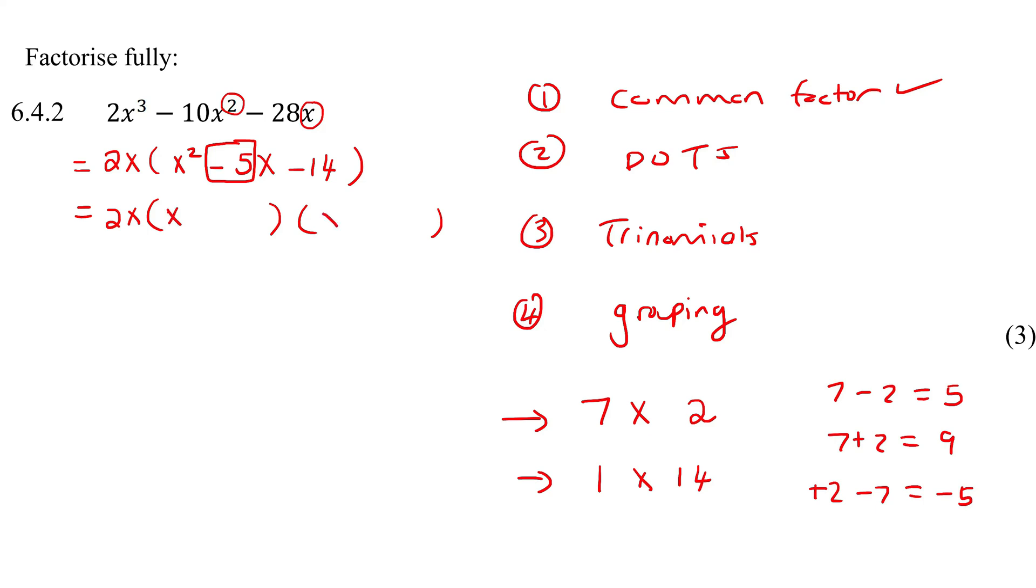So I put x and x over here, because x times x gives me x squared. And then I put a positive two and a negative seven. You could also have switched it around. You could have also had the negative seven first, and then the positive two. Doesn't make a difference. That is the final answer.